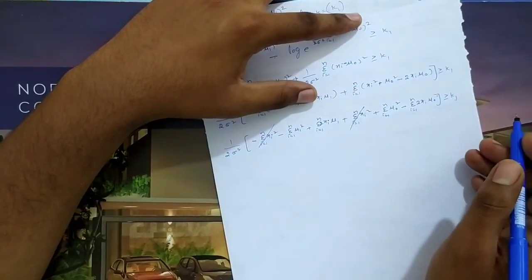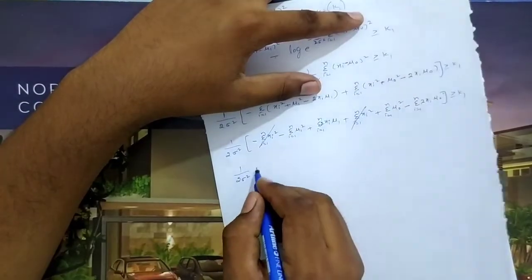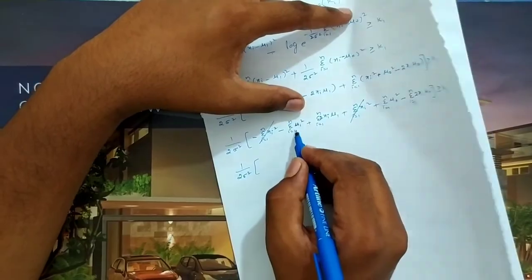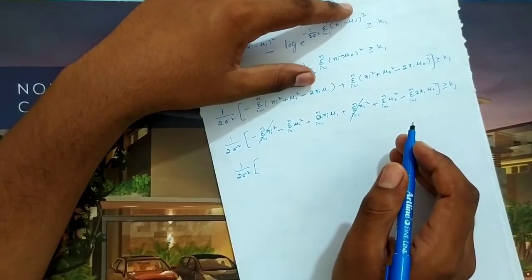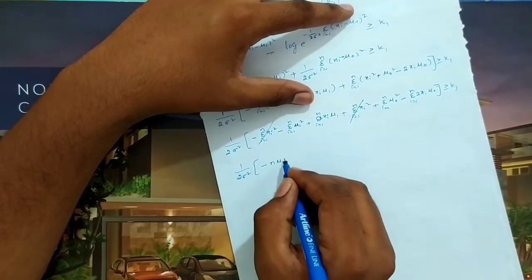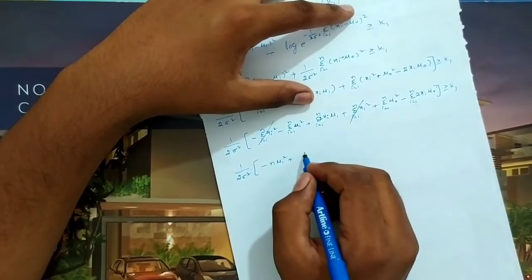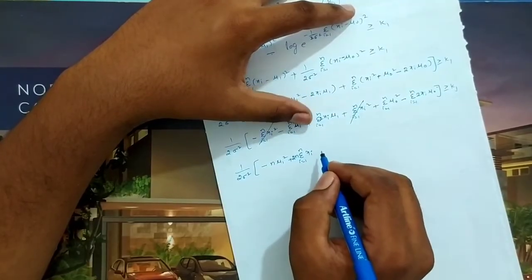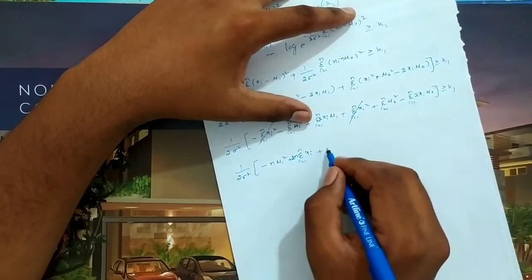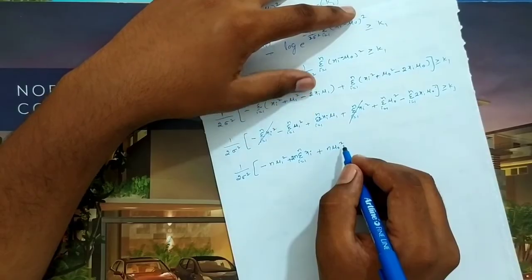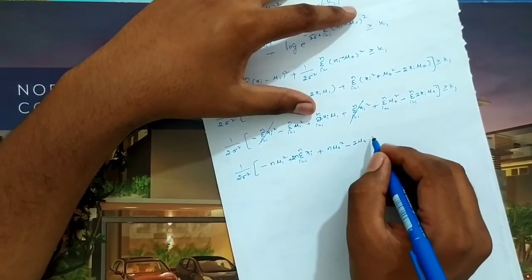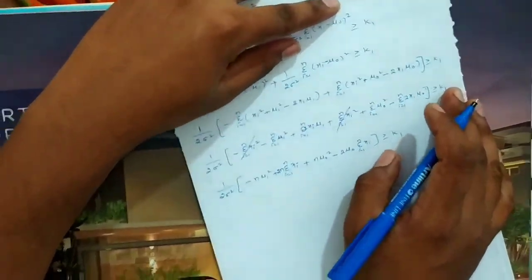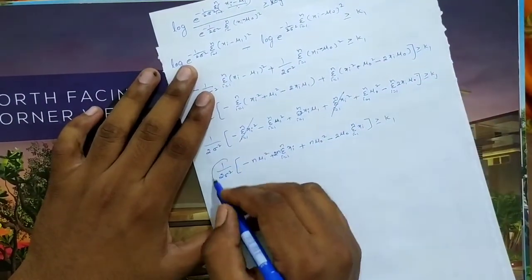So finally, with 2σ² in denominator, we have: −nμ1² + 2Σxi·μ1 + nμ0² − 2Σxi·μ0 ≥ k2. Taking n common and noting Σxi = n·x̄, we get: 2n·x̄·(μ1 − μ0) − n(μ1² − μ0²) ≥ k2.